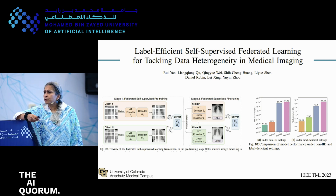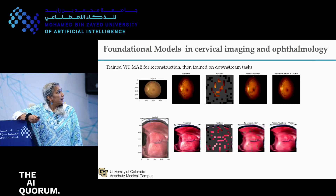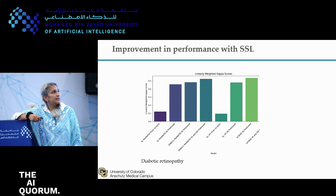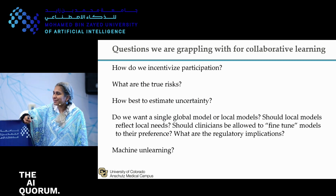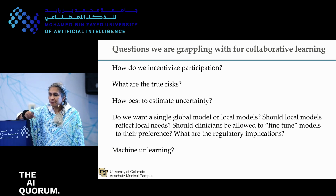There's also work from Daniel Rubin and others at Stanford combining federated learning with self-supervised learning, which seems to suggest that might be a useful approach. We've been playing around with models like MAEs and DINO for the cervical and ophthalmology tasks, and it does seem like we get good performance — with a smaller number of cases from the new domain, it seems to learn well. That's something we'll continue exploring over the next few weeks and months.